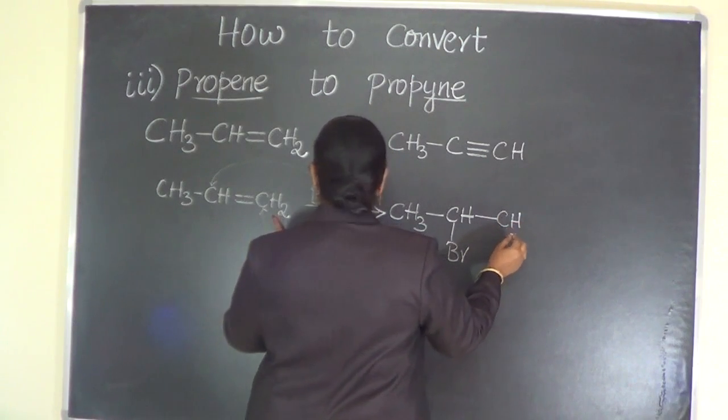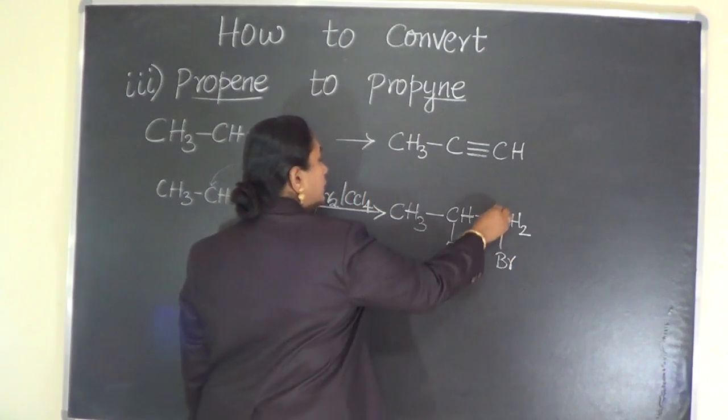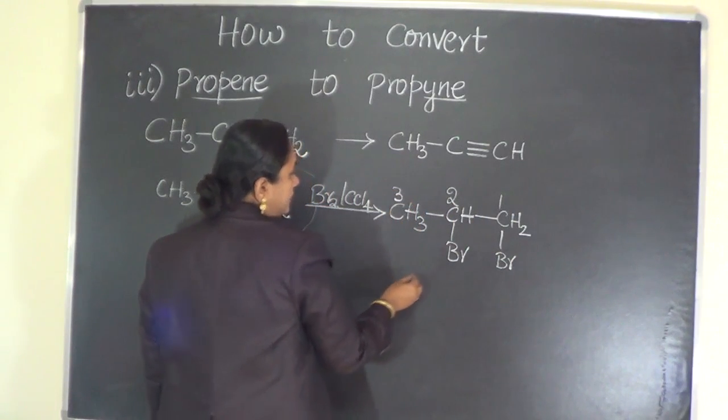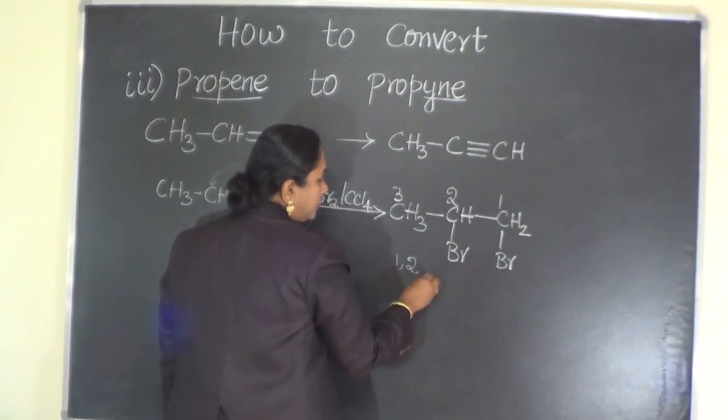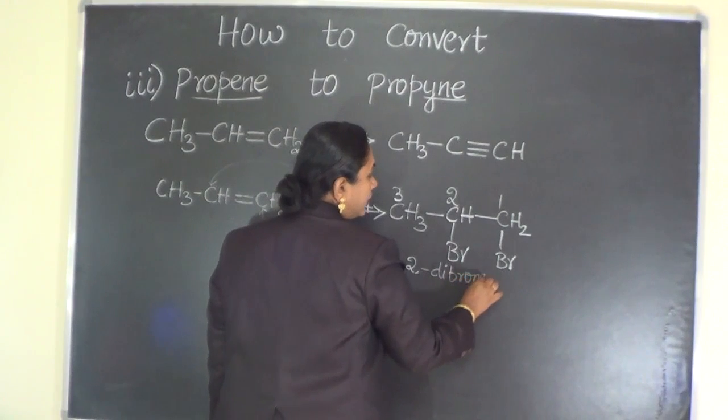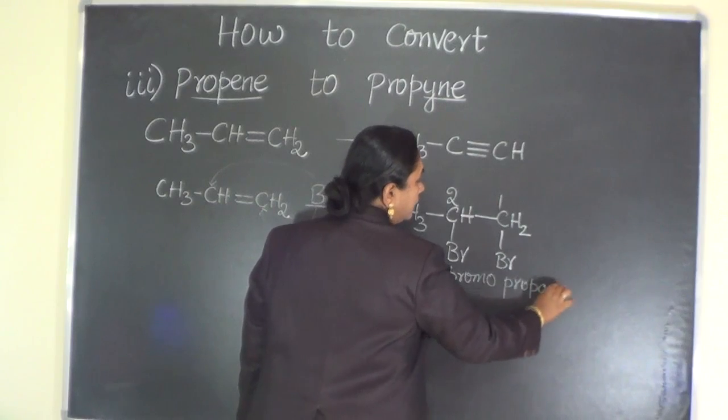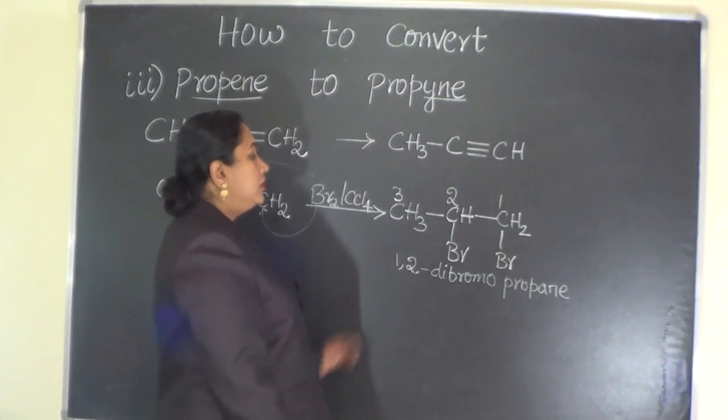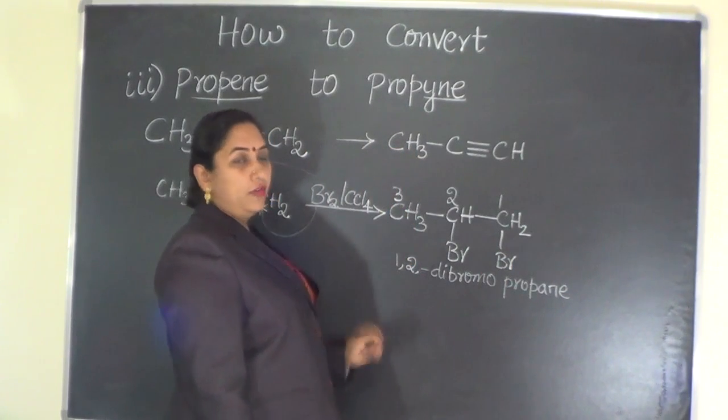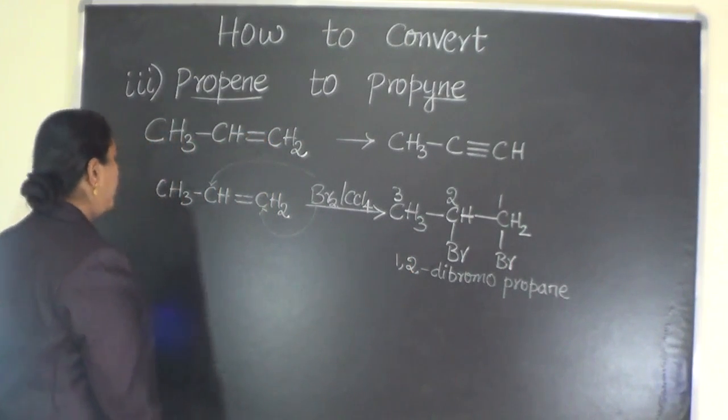That means we landed up in the formation of 1,2-dibromopropane. Now this being our material, we need to obtain from this the product of our requirement, namely propyne. Once we land up in this product, it is quite easy for us to obtain propyne.